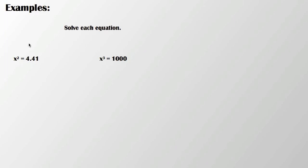Here are some examples. Let's say you need to solve some equations. In this case, I want to take x squared equals 4.41. What I'm going to need to do, in order to solve this, is take the square root of both sides.